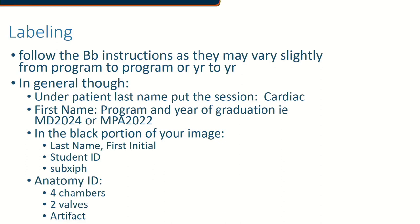As far as the labeling, make sure you follow the Blackboard instructions as they can vary slightly from program to program or year to year. In general, under patient last name you'll put in the session. In the first name, you'll put in your program and typically year of graduation. In the black portion off the image, you're going to put your last name, first initial, and student ID — because there is no such thing as anonymous scanning, especially in clinic. Then label the image you're trying to acquire, in this case sub-xiphoid. You may also need to label four chambers, the valves, or specific artifacts, so we know you're learning the things you need to find to interpret these images as a great clinician.